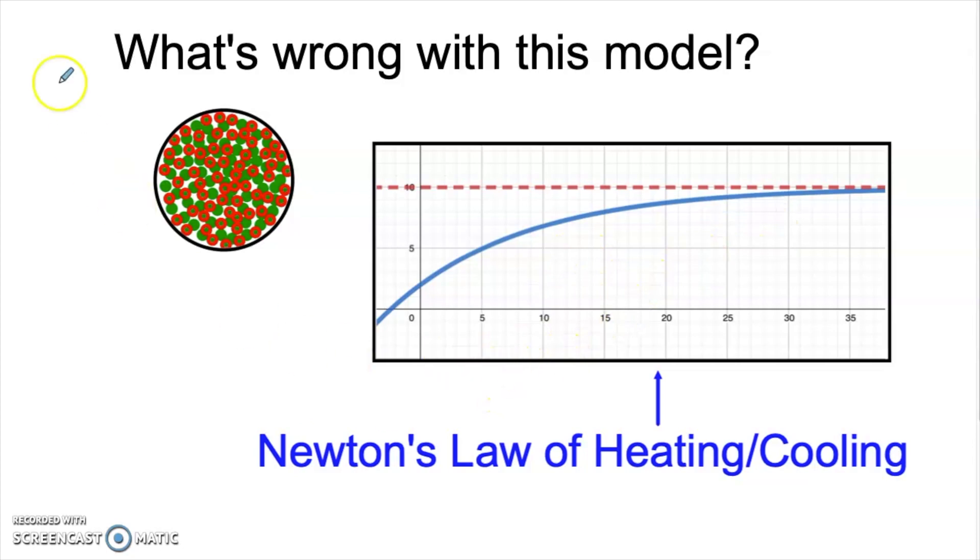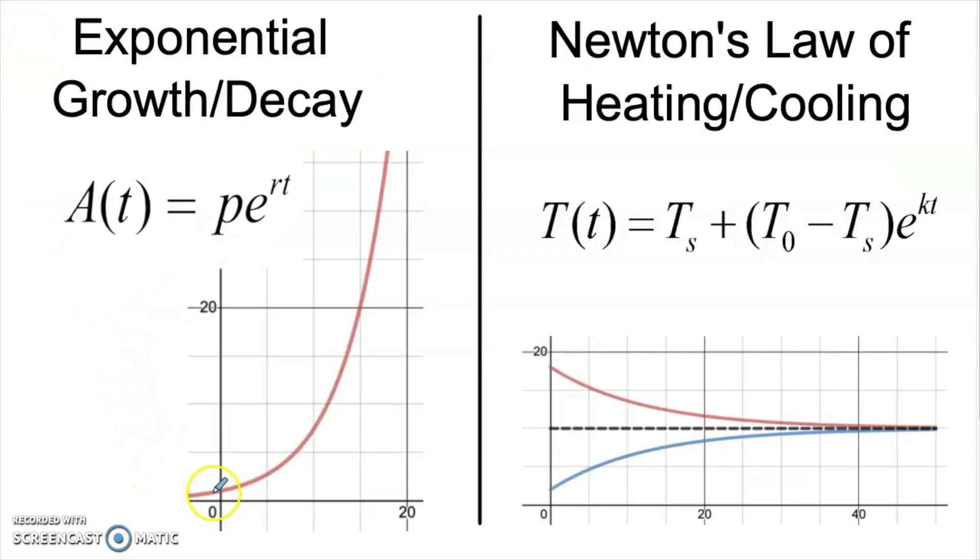To understand how we address this complication, let's first put Newton's and exponential growth side by side. The problem with exponential growth is that it just grows forever, so it won't work in a situation where we have a bound. The problem with Newton's is that it grows fastest in the beginning, and that's a problem because in the beginning we'll actually have small growth.